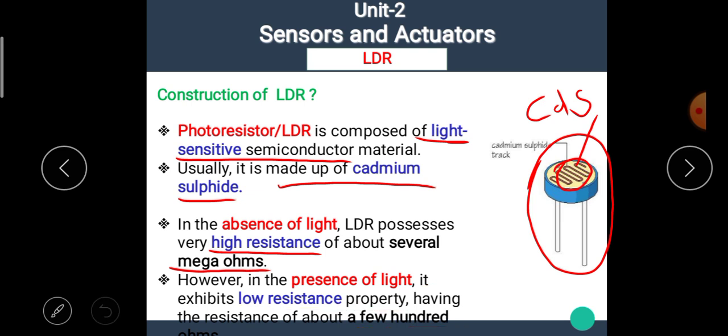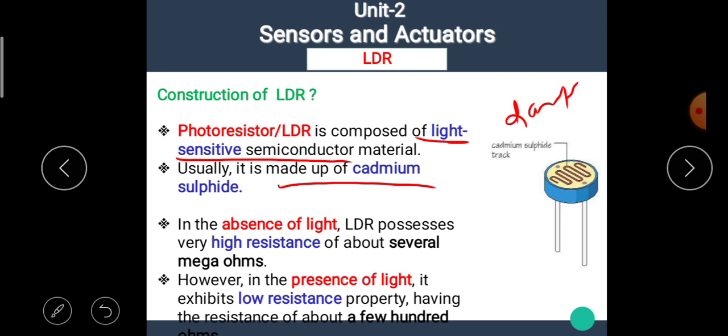However, in presence of light, it exhibits low resistance property having the resistance of about few hundred ohms. That means when the light is not incident on this LDR, that means in dark condition, the LDR has the higher resistance in the range of several mega ohms. But when the light is incident on this LDR, then its resistance drastically reduces to only few hundred ohms.